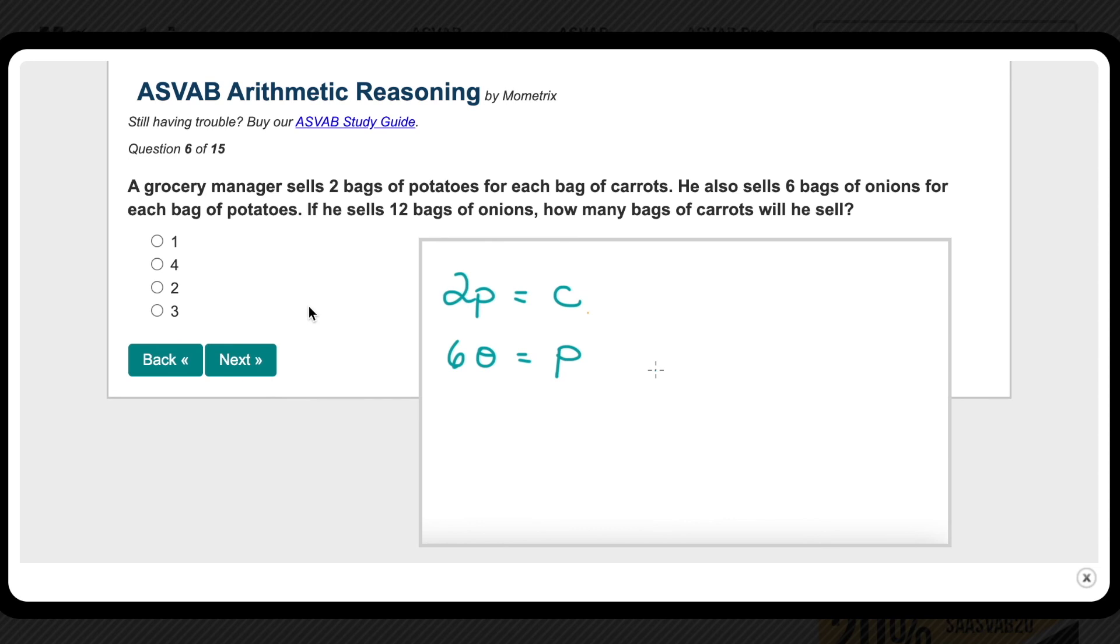Looking at these two equations, you can substitute the potatoes. So here it's saying that one potato is the same thing as six onions. So we can replace the p in the first equation with six onions. And once we simplify, we'll get 12 onions equals one carrot. And now if we go back to the original question, that is actually exactly what we wanted. If he sells 12 bags of onions, he will sell one bag of carrots.